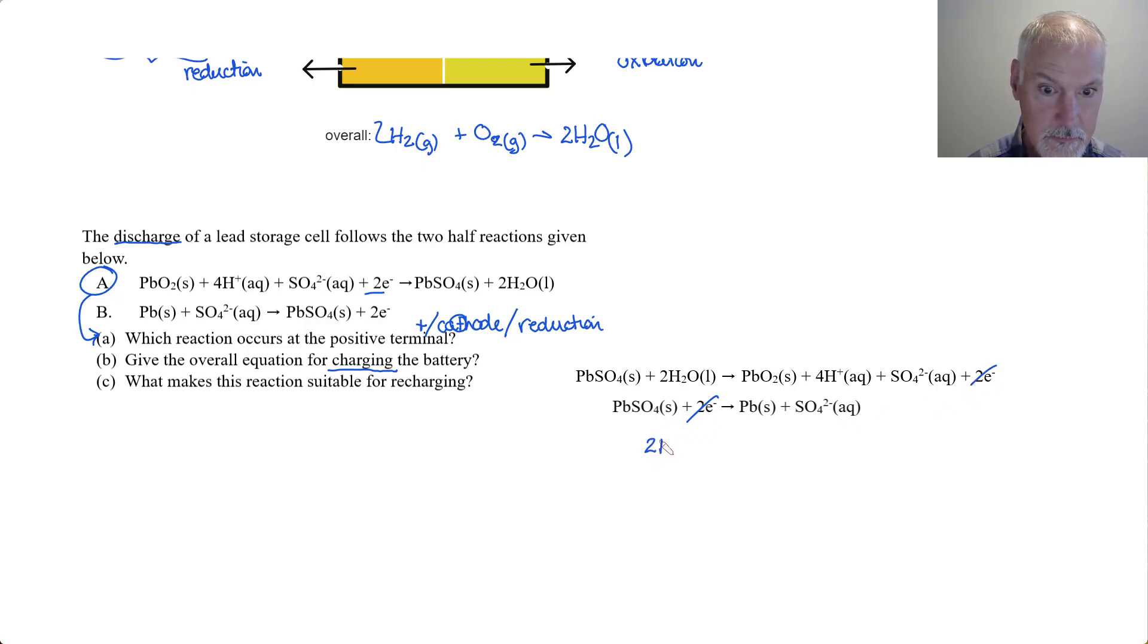And adding this together, we get two lead sulfates solid and two H2O liquid producing our lead oxide solid and lead solid. And that's going to be two of those four of those. That's going to be two sulfuric acid.